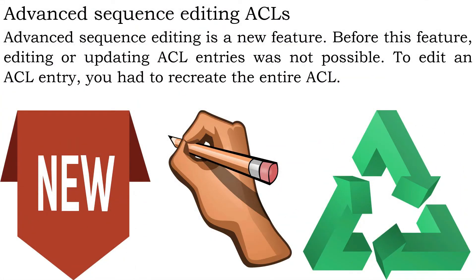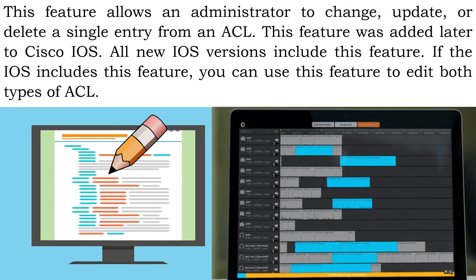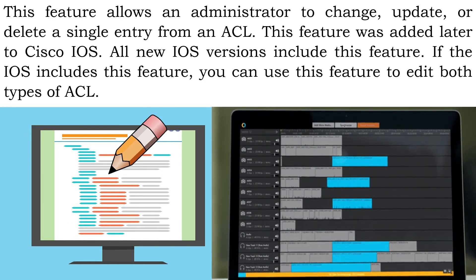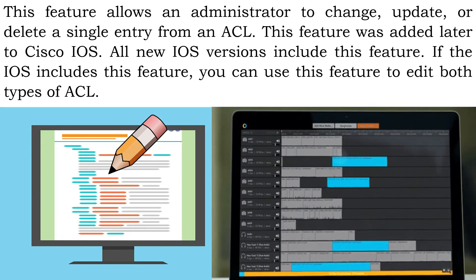Advanced Sequence Editing is a new feature. Before this feature, editing or updating ACL entries was not possible — to edit an ACL entry, you had to recreate the entire ACL. This feature allows an administrator to change, update, or delete a single entry from an ACL. It was added later to Cisco IOS, and all new IOS versions include it. If the IOS includes this feature, you can use it to edit both types of ACL.